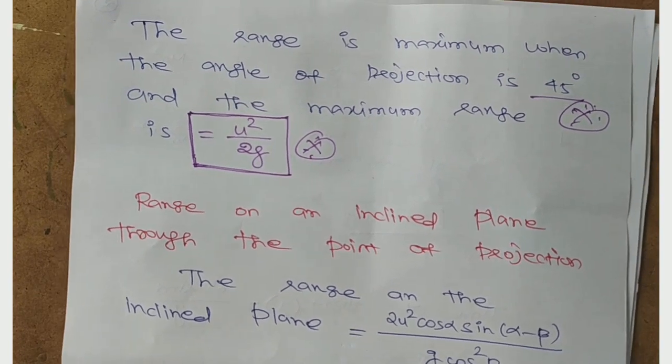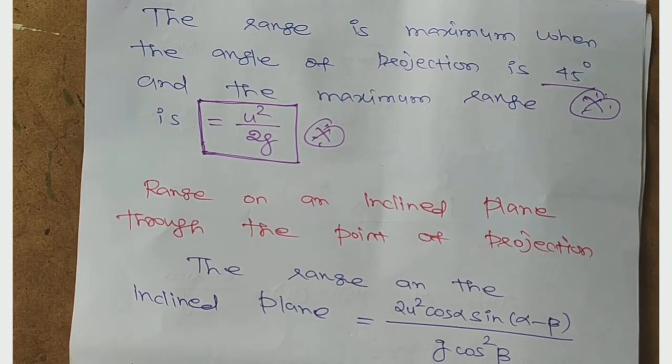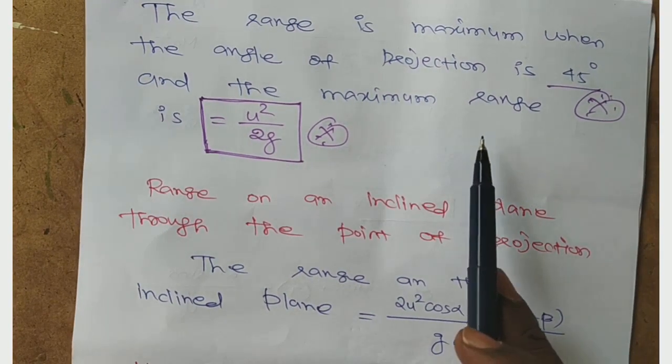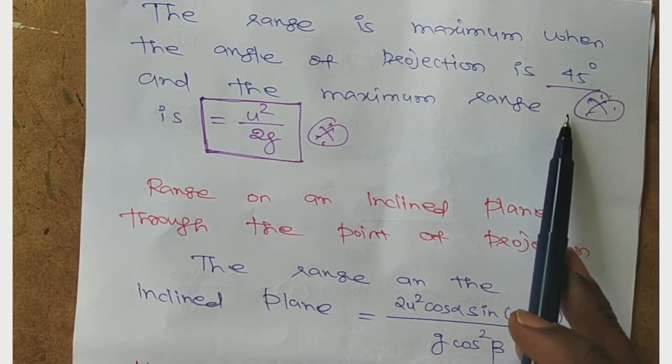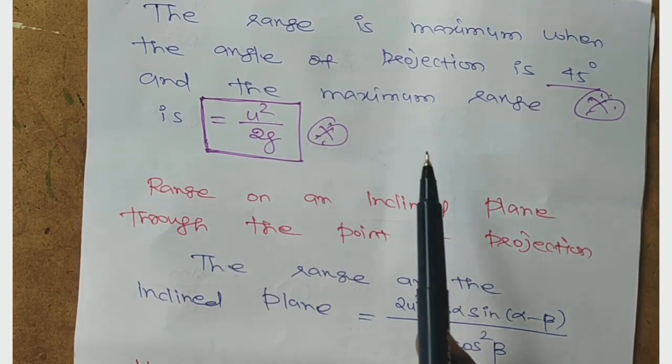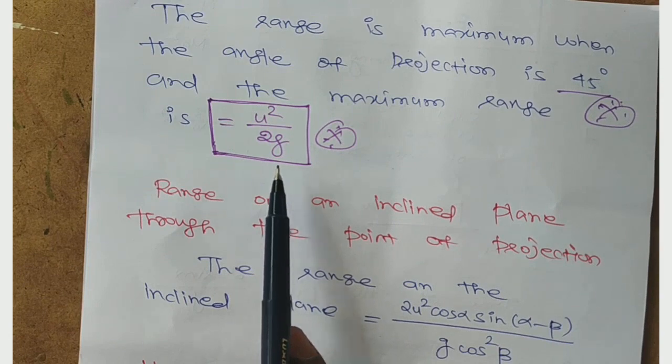So this is the horizontal range. The range is maximum when the angle of projection is 45 degrees, that is π/4. And the maximum range is u²/g. This is very important.